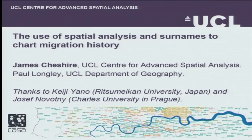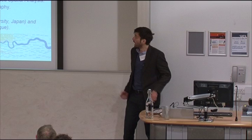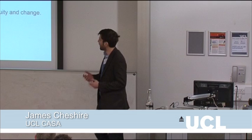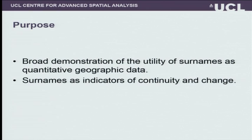Paul introduced much of this work already. It's something I did as part of my PhD in the Department of Geography. I'm very much concerned with how surnames can demonstrate their utility as a form of quantitative geographic data, but also how they indicate continuity and change within a population. The basic idea is areas with relatively stable surname proportions tend to have more static populations than those mixed up with many different names, like in central London.